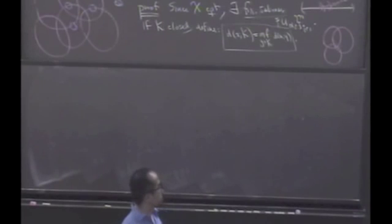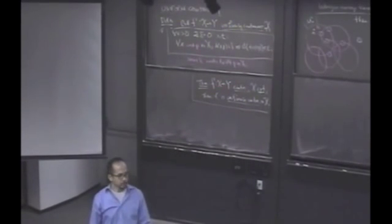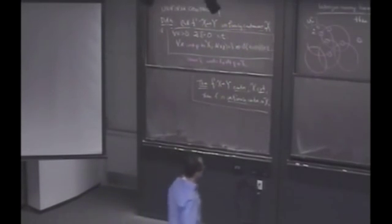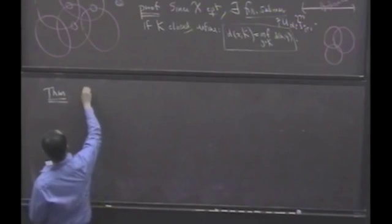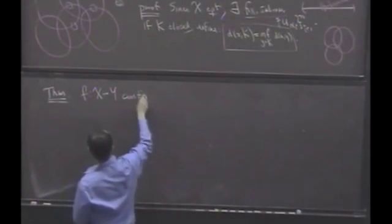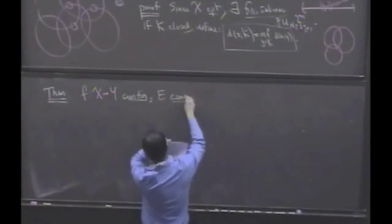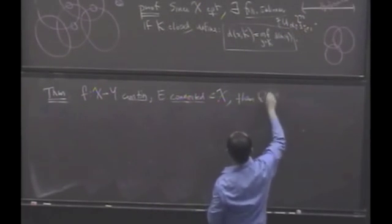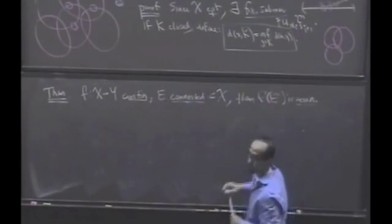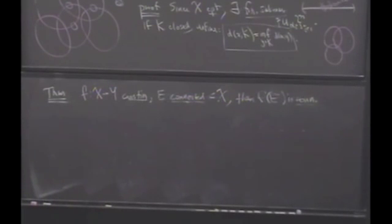Let's resume. We've seen that continuity preserves lots of different things — continuity preserves limits, continuity preserves compactness: the image of a compact set is compact. And as somebody conjectured last time, continuity also preserves connected sets: if you take the image of a connected set, the image is connected. So suppose f from X to Y is continuous and E is a connected subset of X, then f(E) is connected. A very believable result — you can't continuously deform a set into something that's not connected without introducing a discontinuity.